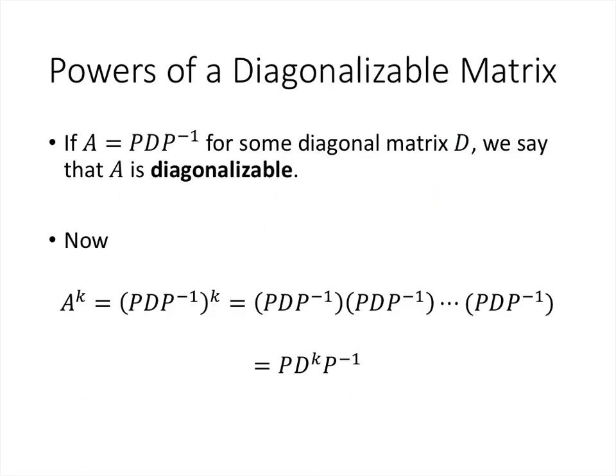One consequence of this is that powers of a diagonalizable matrix are also easy to compute. If we multiply PDP⁻¹ by itself several times, every time a P⁻¹ appears next to a P they cancel out, leaving P on the left, P⁻¹ on the right, and D^k in between. Since D^k is easy to compute, we only need to multiply three matrices together, which is still efficient even when k is large.